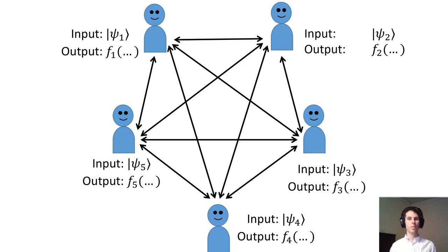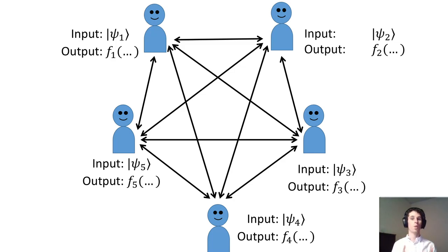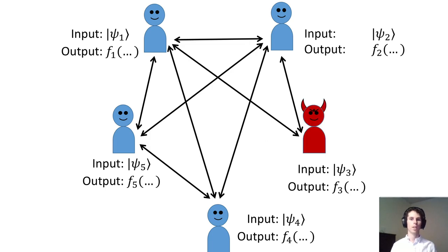In multiparty quantum computation, a number of parties want to perform a quantum computation on their quantum inputs. At the end of the protocol, each party gets its own output. For security, no party should learn anything about any other party's input, even if they arbitrarily deviate from the protocol.